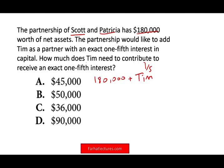This sounds like a GMAT problem. Scott and Patricia have $180,000, and we're going to add Tim. Tim's going to receive one-fifth of the whole partnership. We don't know what the whole partnership total will be after adding Tim, so we call it X. That new total is X, and all we have to do is solve for X to find out what the new partnership total is. Then we give Tim one-fifth of that new partnership value.